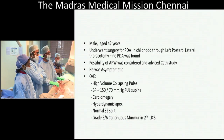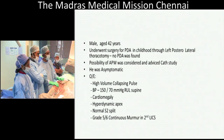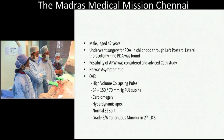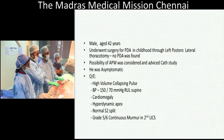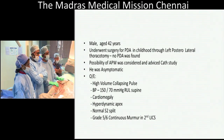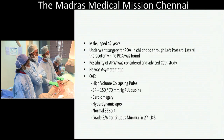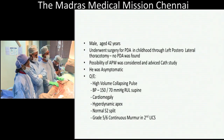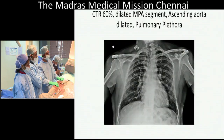On examination he has high volume collapsing pulse. Blood pressure is 150 by 70 mmHg in the right upper limb supine. He has cardiomegaly, hyperdynamic apex, normal S2 split. There is a continuous thrill and grade 5 out of 6 continuous murmur in the second left intercostal space.